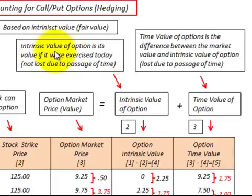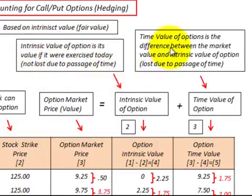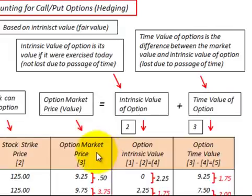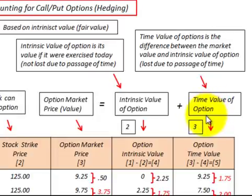The intrinsic value of the option is the amount or portion of the option that is not lost due to the passage of time, whereas the time value of the option is the portion that is lost due to the passage of time. We'll go over how to calculate the intrinsic value and the time value of the option, and then look at how to record this option on the balance sheet and on the income statement.